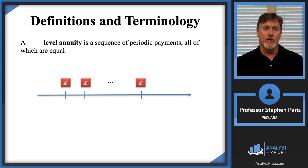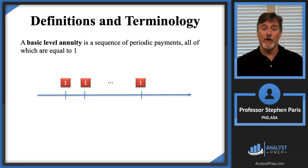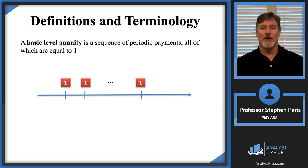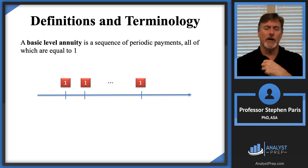Then there's something called a basic level annuity. It's level, so all the payments are equal, and 'basic' means they're all equal to a value of one. We're really going to focus our attention on basic level annuities, and you'll see why later on in the video.